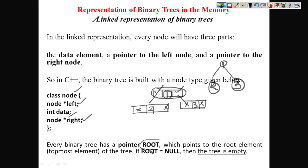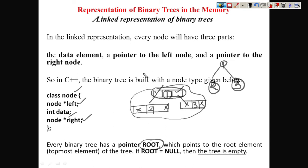We will take one pointer called root. Just like in a linked list we have a special pointer called first, front, or head, here we give that pointer the name root. The purpose of this pointer is the same — it will always point to the first node of your linked list, which is the root node. We have one pointer of type node which will take the address of the root node. If root is null, that means there is no node existing in the tree and the tree is empty — we can call it a null tree or empty tree.